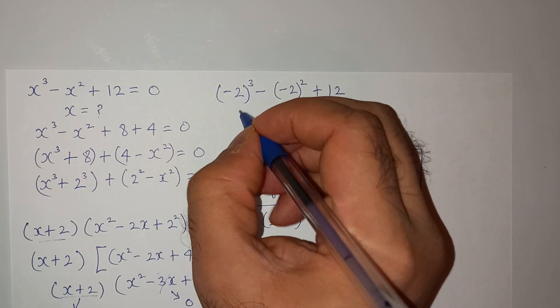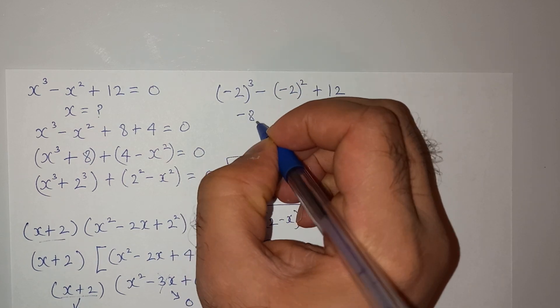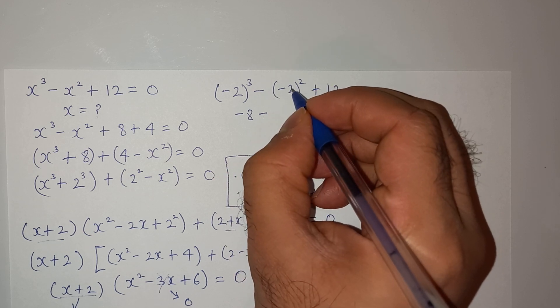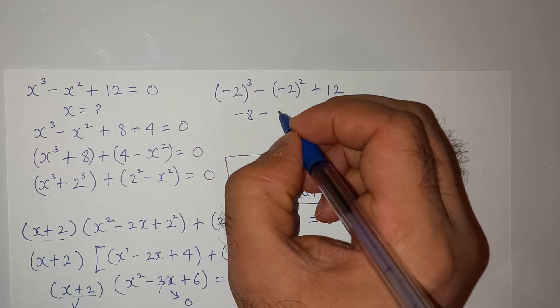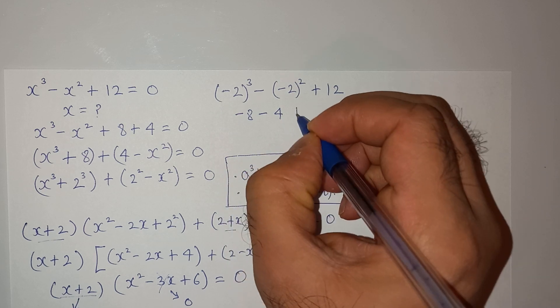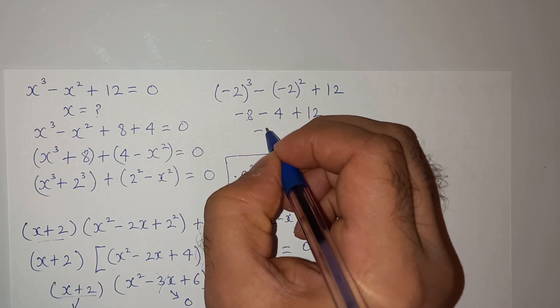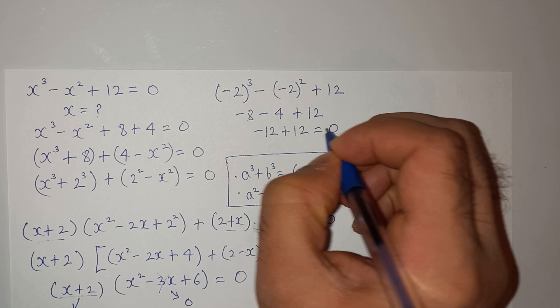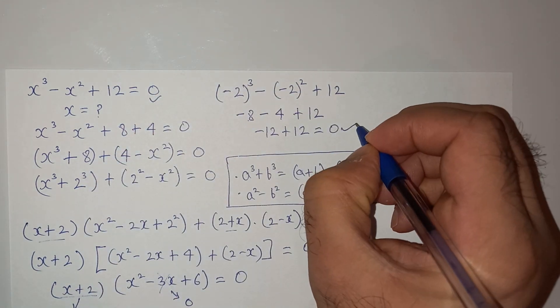Now (minus 2) cubed is minus 8, minus (minus 2) squared is 4, plus 12. So minus 8 minus 4 is minus 12, and then plus 12 which is equals to 0, and we are right.